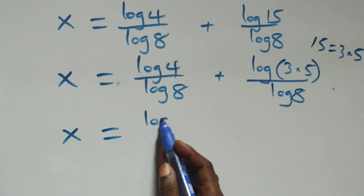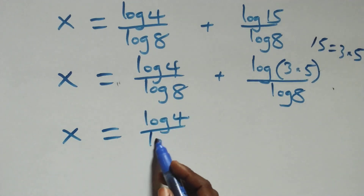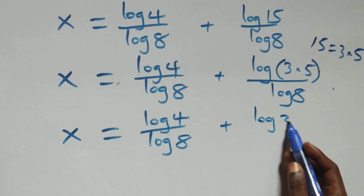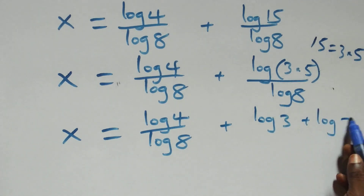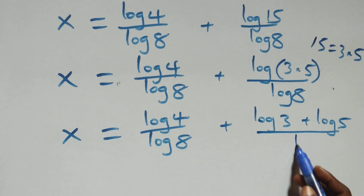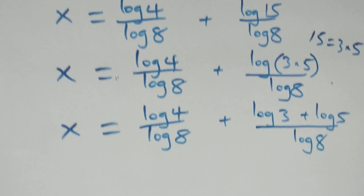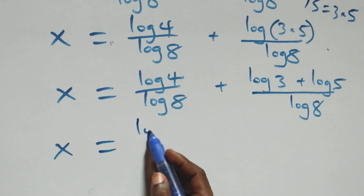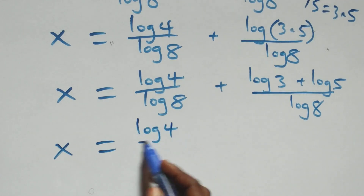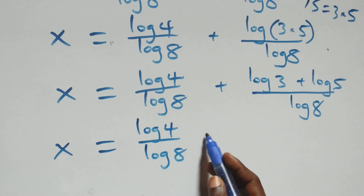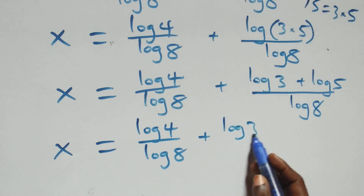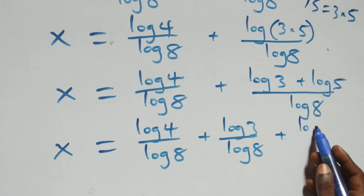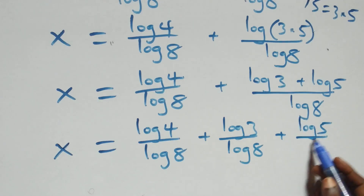Applying the product law again to log 15 = log(3 times 5), we get x equals to log 4 over log 8 plus log 3 over log 8 plus log 5 over log 8, separating into three fractions.